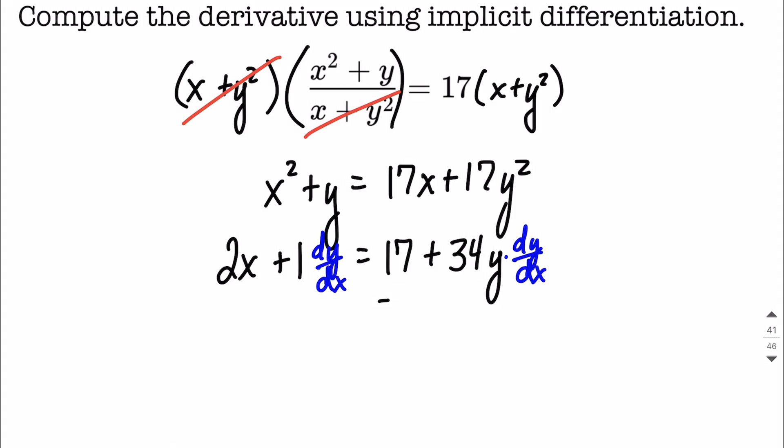So the first thing I'm going to do is go ahead and move this 17 to the left-hand side. And I'm doing this kind of one step at a time. And that's 1 dy dx still hanging out here. And then on the right-hand side, we still have that 34y dy dx.